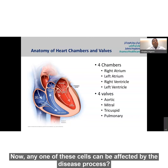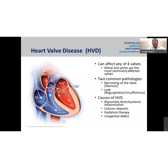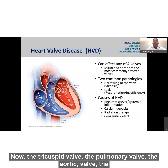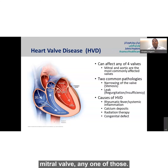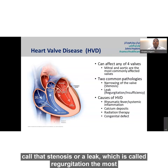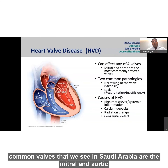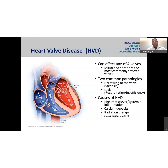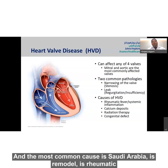Any one of these valves can be affected by disease. The tricuspid valve, pulmonary valve, aortic valve, and mitral valve are usually affected by two pathologies: either narrowing, which we call stenosis, or a leak, which is called regurgitation. The most common valves affected in Saudi Arabia are the mitral and aortic valve, and the most common cause is rheumatic heart disease.